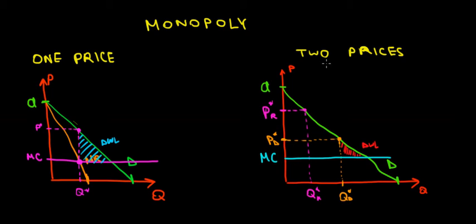Now let's look at what happens if we charge two prices — a regular price and a discount price for consumers who are more price-sensitive, because not everyone can afford the monopolist's prices. By charging a discount price to some consumers, we sell to new potential customers. On our demand curve, we charge the regular price and sell a low quantity because the price is high. With the discount price, we expand sales further along the demand curve.